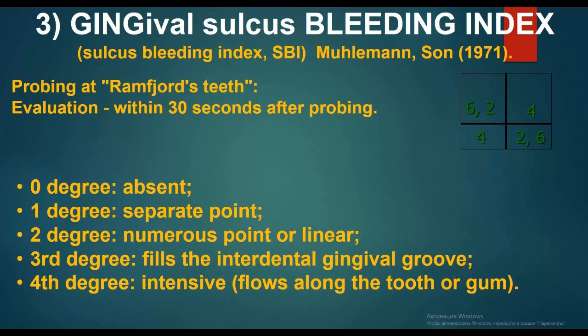Gingival Sulcus Bleeding Index (SBI) by Mühlemann and Son, 1971: probing in Ramfjord teeth (16, 12, 24, 36, 32, and 44), evaluation within 30 seconds after probing. Grade 0: absent. Grade 1: separate point. Grade 2: numerous points or linear. Grade 3: fills the interdental gingival groove. Grade 4: intensive, flows along the tooth or gum.